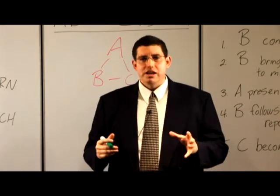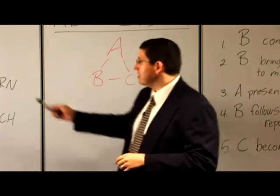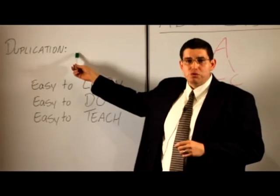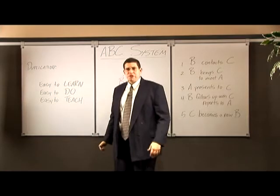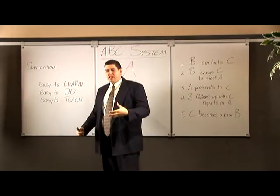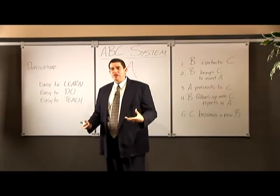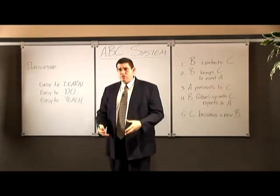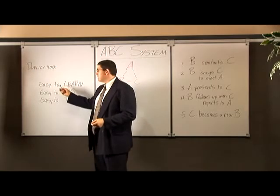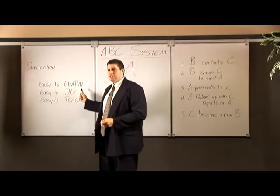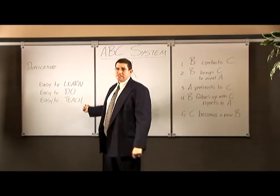It's a simple system and some of the elements of a simple system, remember we're trying to duplicate, we're trying to create duplication. If you remember from the compensation plan, we talked about building bees and you get five bees who go out there and they develop five bees, who develop five bees, that's duplication. In order to have effective duplication, you need a system that's easy to learn, a system that's easy to do, and a system that's easy to teach.